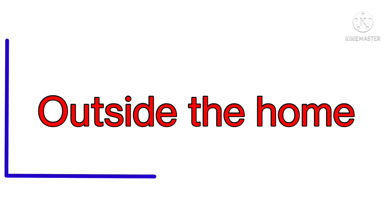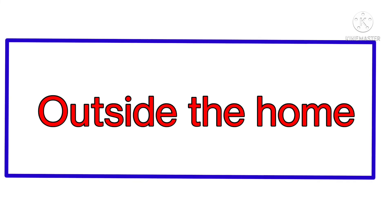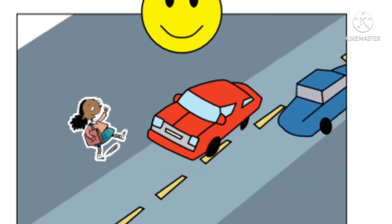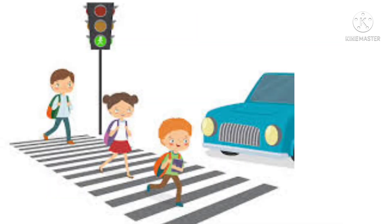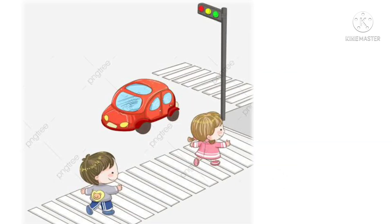Outside the home. First: I will walk on the left side of the road. Mein hamisha road ke left side mein hi chalunga. Next: I will cross the road at the zebra crossing. Mein road hamisha zebra crossing pe he cross karunga.